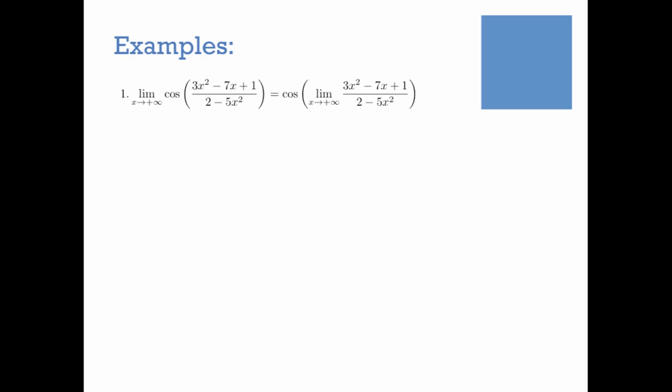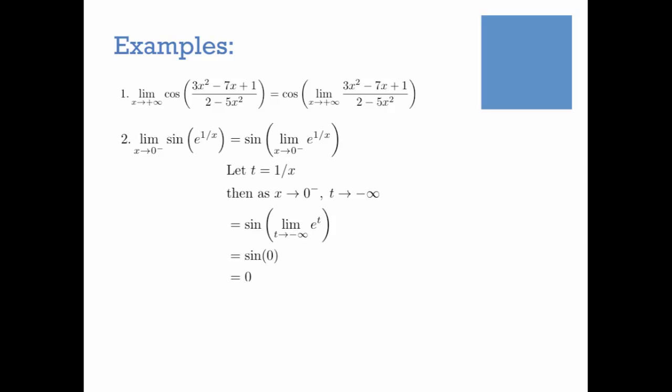Let's look at some examples. Consider the limit of cosine of a messy rational function as x goes to infinity. The continuity of cosine tells us we can just take the limit of what's inside and plug that in, giving us cosine of 3 over negative 5. For something more complicated, like sine of e to the 1 over x as x goes to 0 from the left, we put the limit inside the sine, then make a substitution: let t equal 1 over x. As x goes to 0 from the left, t goes to minus infinity, and we end up with sine of 0, which is 0.